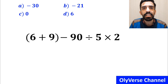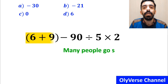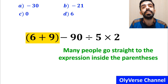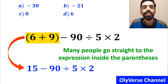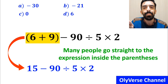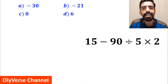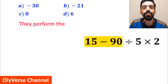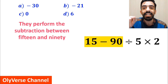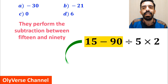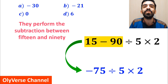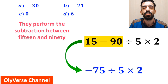In the first step of solving this question, many people go straight to the expression in parenthesis and simplify the whole expression to 15 minus 90, divided by 5, multiplied by 2. In the next step, they perform the subtraction between 15 and 90, and simplify this expression to negative 75, divided by 5, times 2.